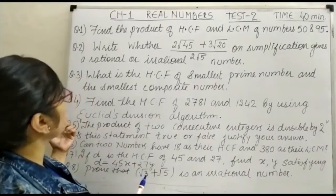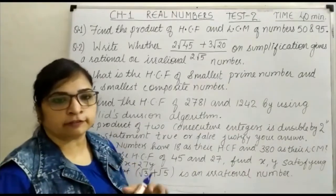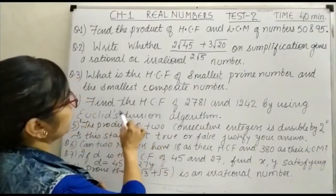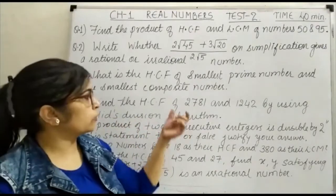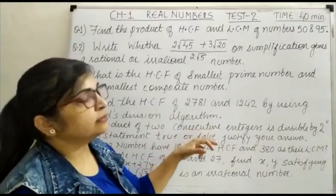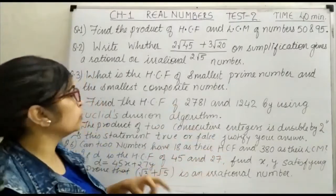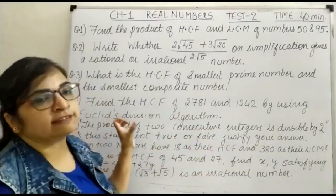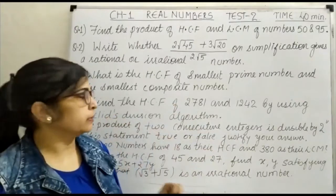Comes to question number 4. In question number 4, it is a very simple one. You have to find the HCF of 2781 and 1242 by using Euclid's division algorithm.